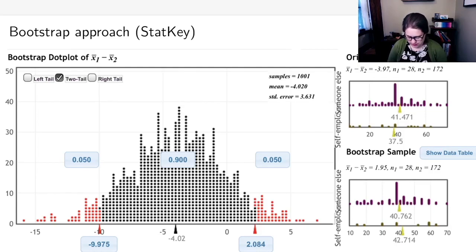If we look at the confidence interval from the bootstrap approach, it would be -9.975 to 2.084. That's pretty similar to the one we found using the distributional approximation.